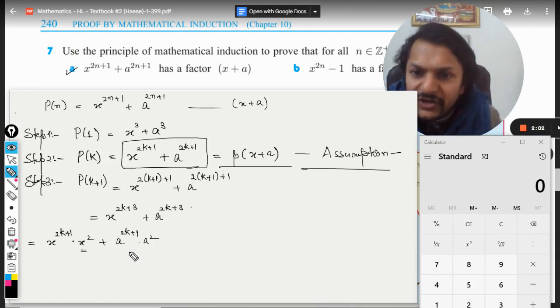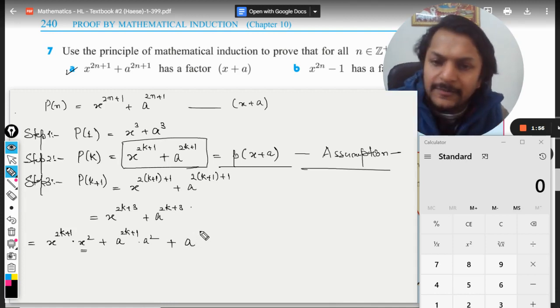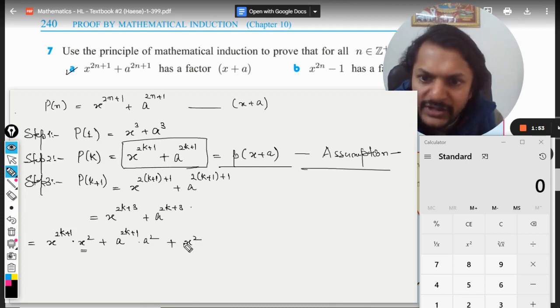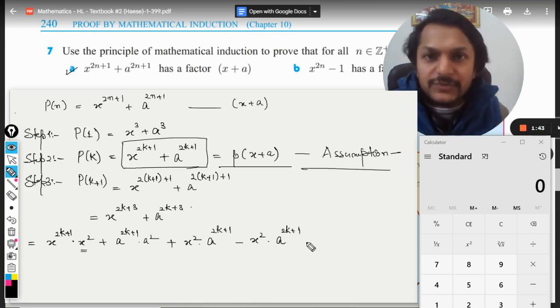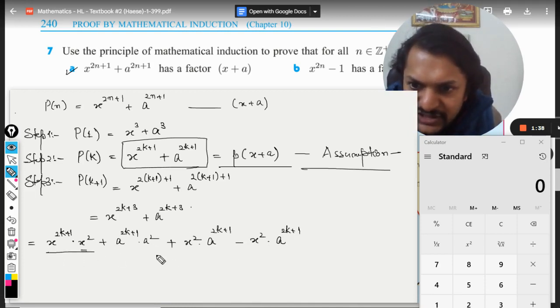What can we do? We can add a term here which will be like x² times a raised to power 2k+1. I have to subtract the same term, otherwise the statement will become different. I have to subtract the same term.